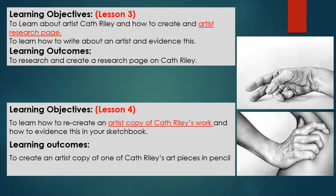Your learning objectives for lesson three — because you're just doing the research this lesson — are to learn about artist Kath Riley and how to create an artist research page, and to learn how to write about an artist. The learning outcome is to research and create a research page on Kath Riley. For your next lesson, the learning objective is to learn how to recreate an artist copy of Kath Riley's work and how to evidence this in your sketchbook, using the grid technique from the first lesson.